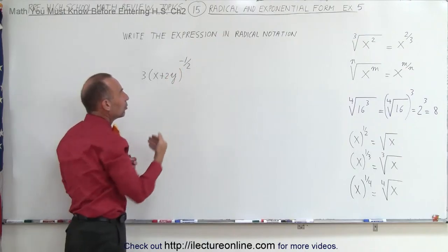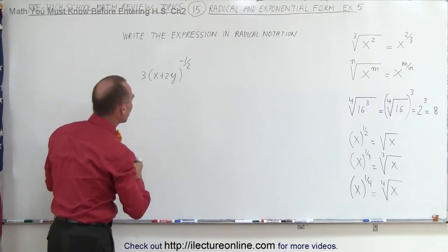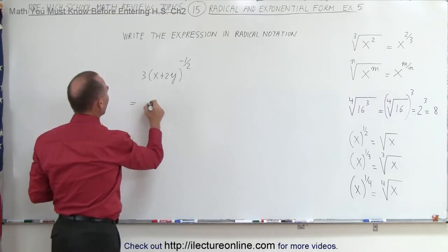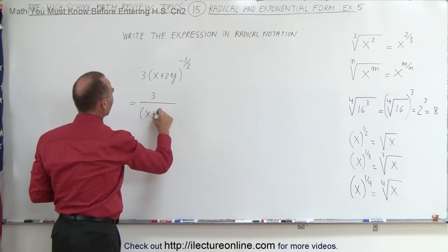We can turn a negative exponent into a positive exponent by moving it to the denominator. So we're going to rewrite this as 3 divided by the quantity (x + 2y) to the positive 1/2 power.